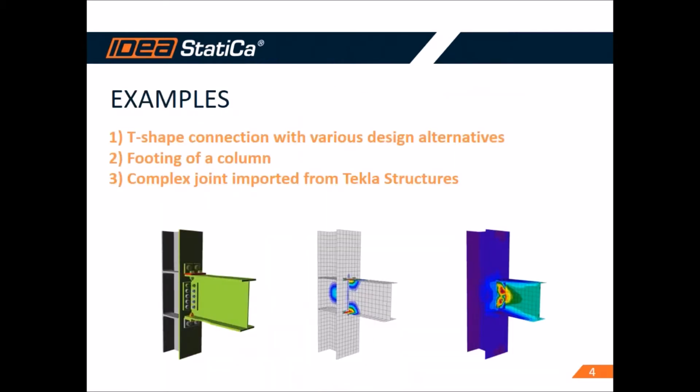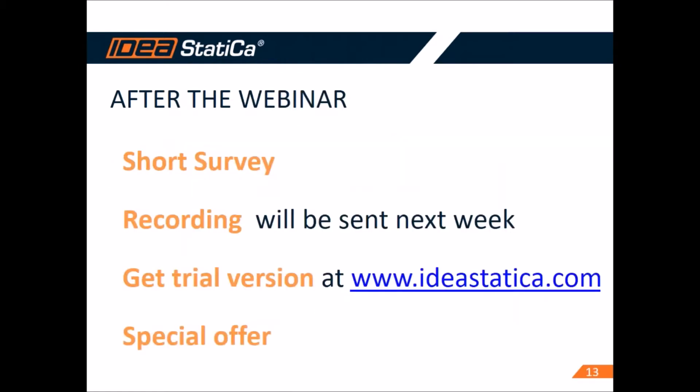We will go through three examples. The first is a T-shape connection with various design alternatives. The second is a footing of a column. And the last is a complex joint which will be imported from Tekla Structures software.